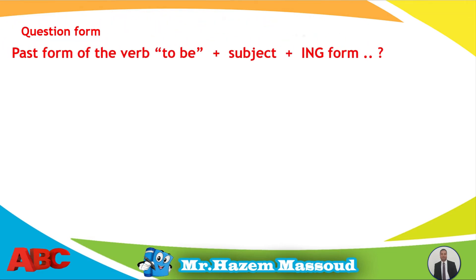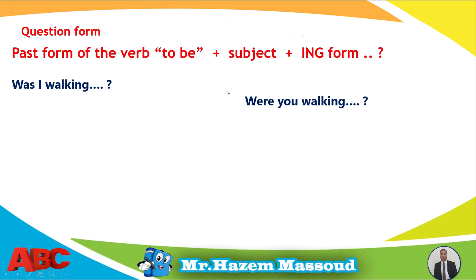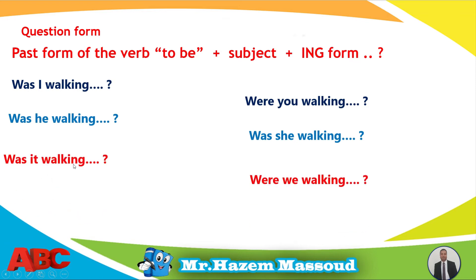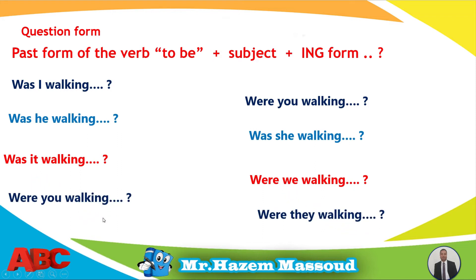In the question form, I start the sentence with the past form of the verb 'to be' — was or were — plus subject plus -ing form. This is a yes/no question. For example: Was I walking? Were you walking? Was he walking? Was she walking? Was it walking? Were we walking? Were you walking? Were they walking? This is the yes/no question form.